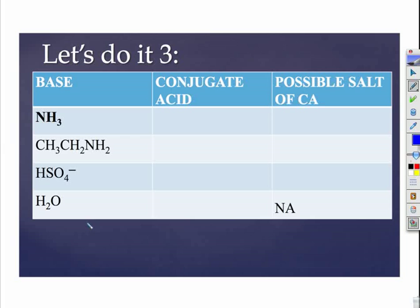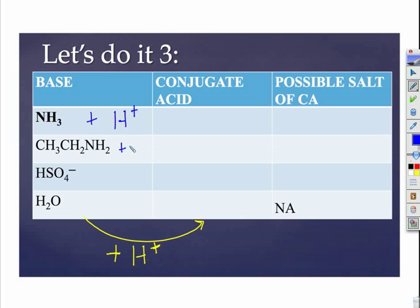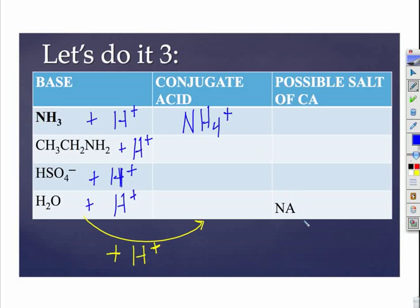Now let's do some bases. Remember, we want to do what bases do best. In Bronsted-Lowry terms — that was in your inquiry — bases gain an H and a plus charge. So for each of these, we're going to add an H and a plus. For NH₃, we'd have NH₄⁺ — that's ammonium.